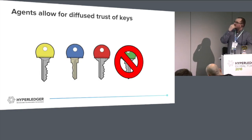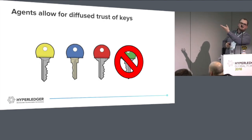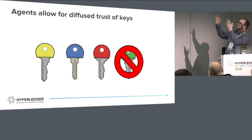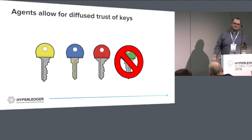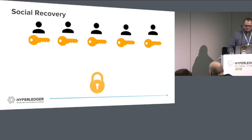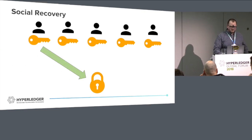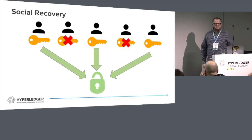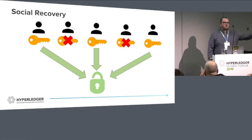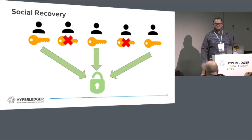Similarly, agents allow for diffuse trust - that's essentially the agent authorization policy. For social recovery, if I've got five friends and I hand them a set of keys, I may assign that I want three of my friends to give me back their portion of the key so I can reassemble it and identify myself. That's using polynomial interpolation - a fancy way of saying how do I figure out the 'b' in the y = mx + b formula when I've only got a single x point.